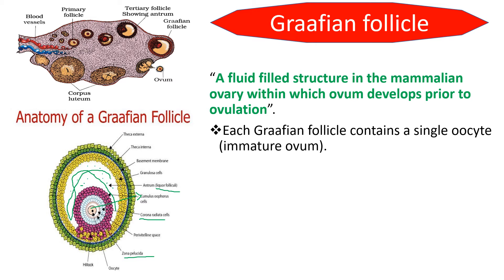Near to the antrum, there are a few layers of yellow-colored cells arranged in a circular manner called granulosa cells — three layers of yellow-colored cells. Outer to the granulosa cells, there is a basement membrane. Outer to the basement membrane, the theca is present. The theca is divided into two types: theca interna, represented by greenish-colored cells, and theca externa, represented by yellow square-shaped cells in the outer layer.